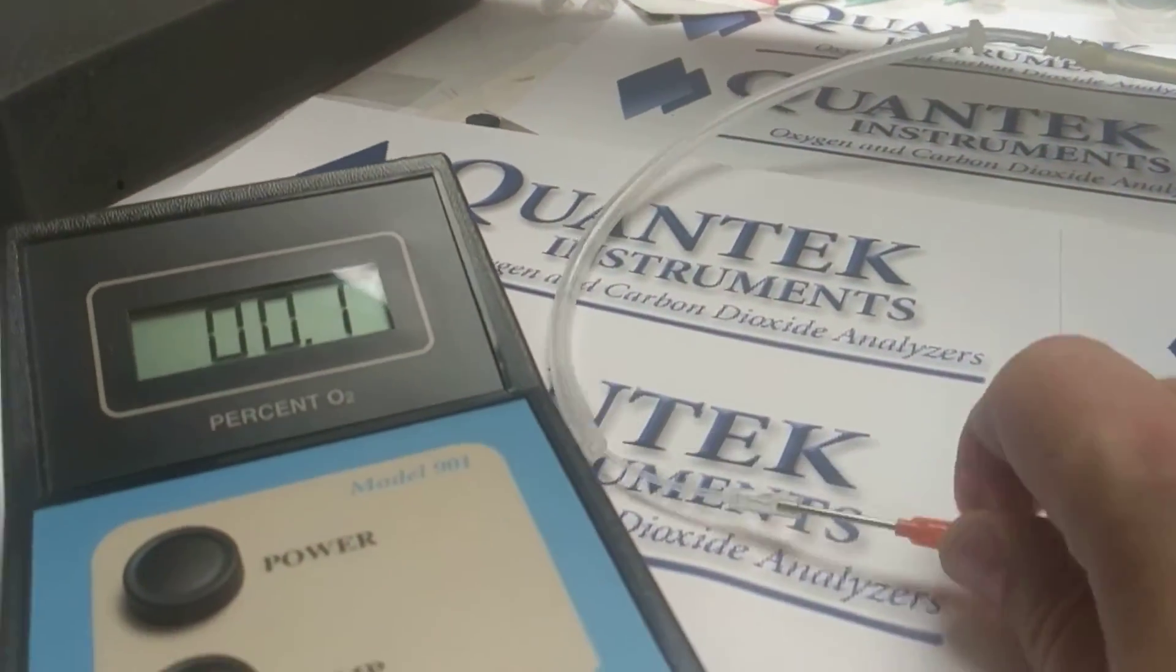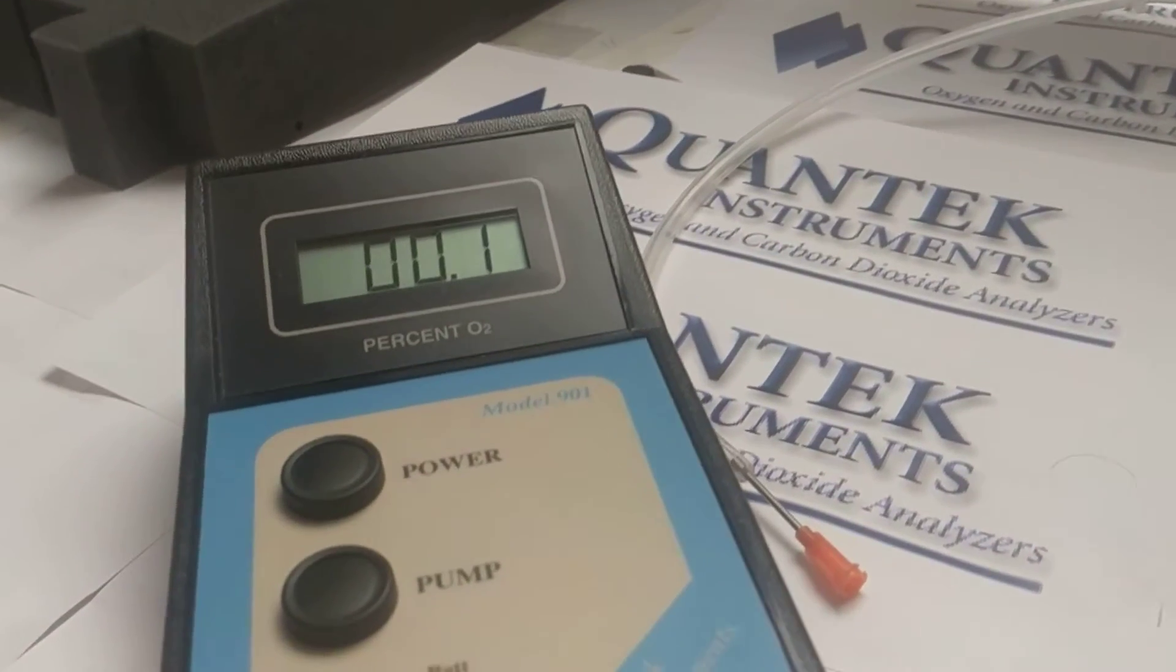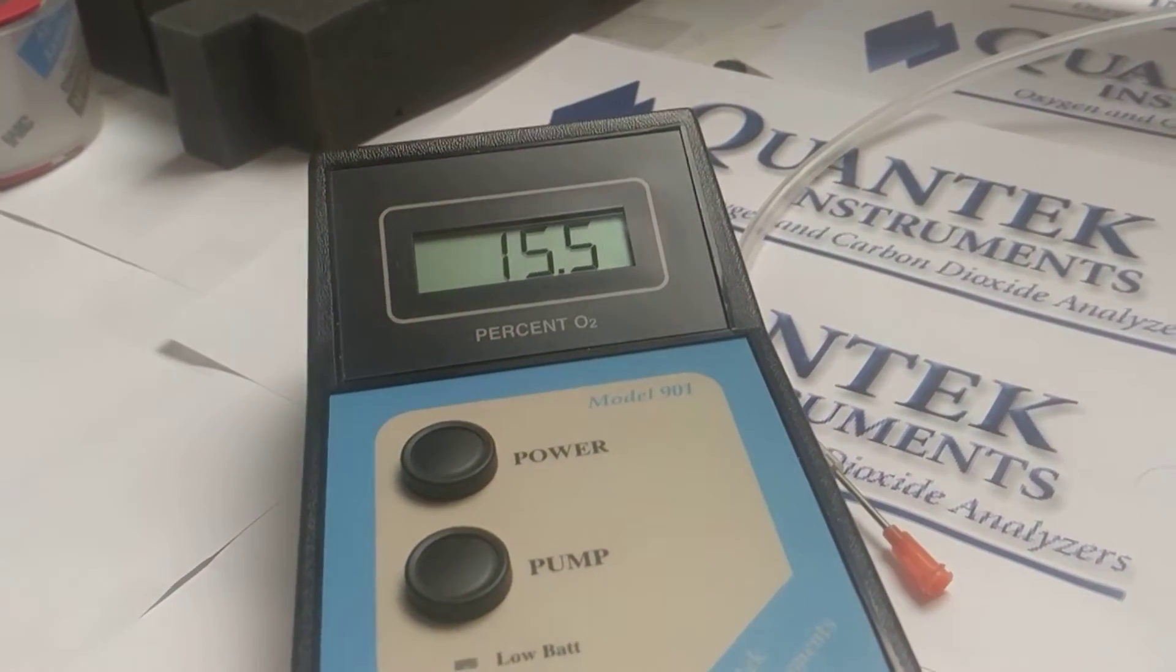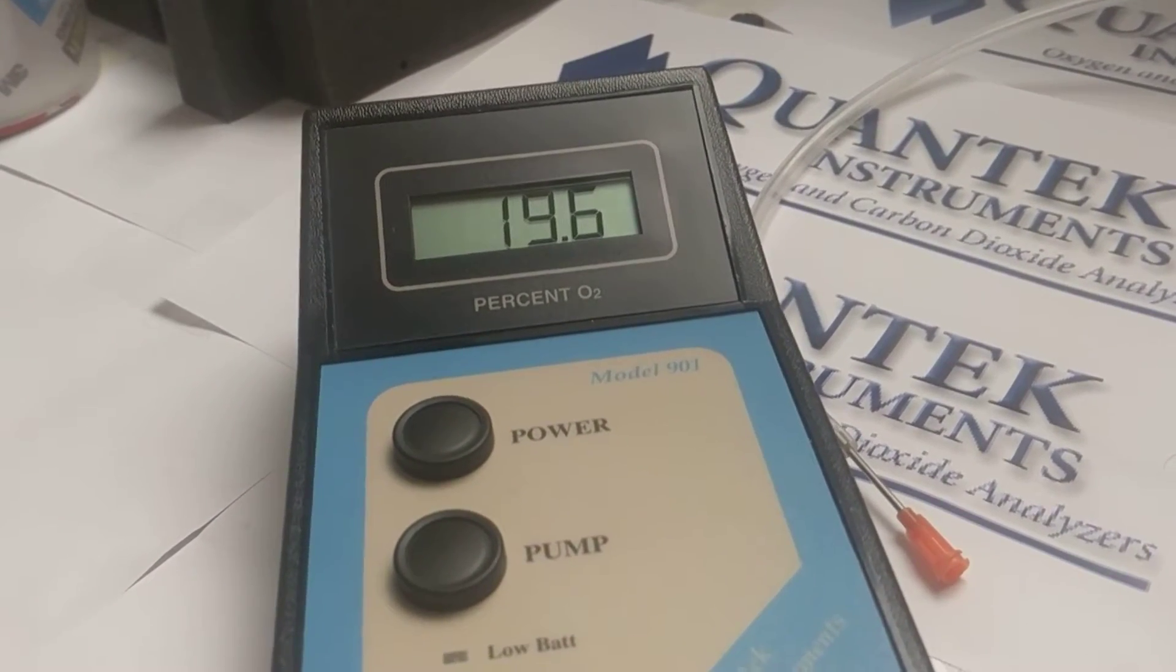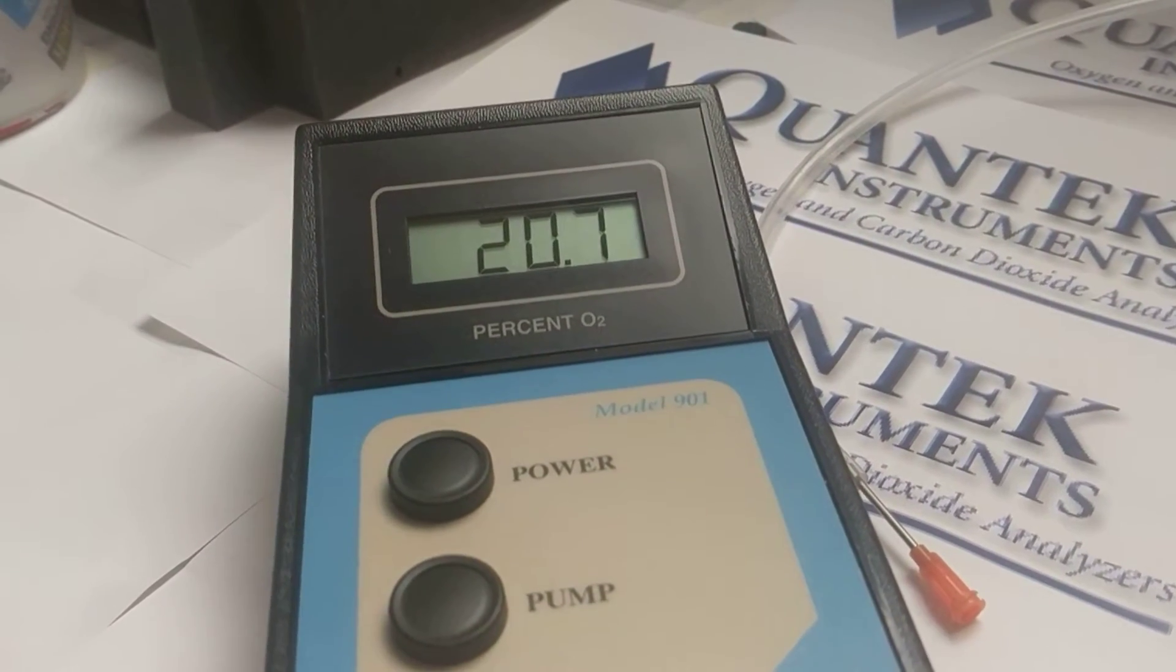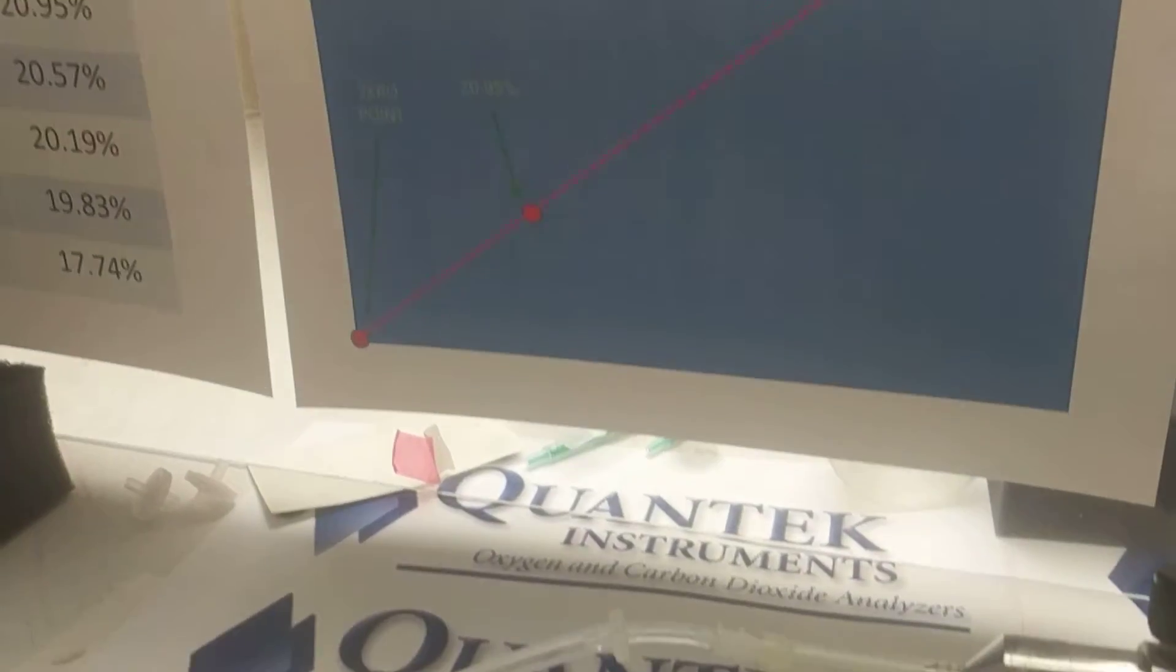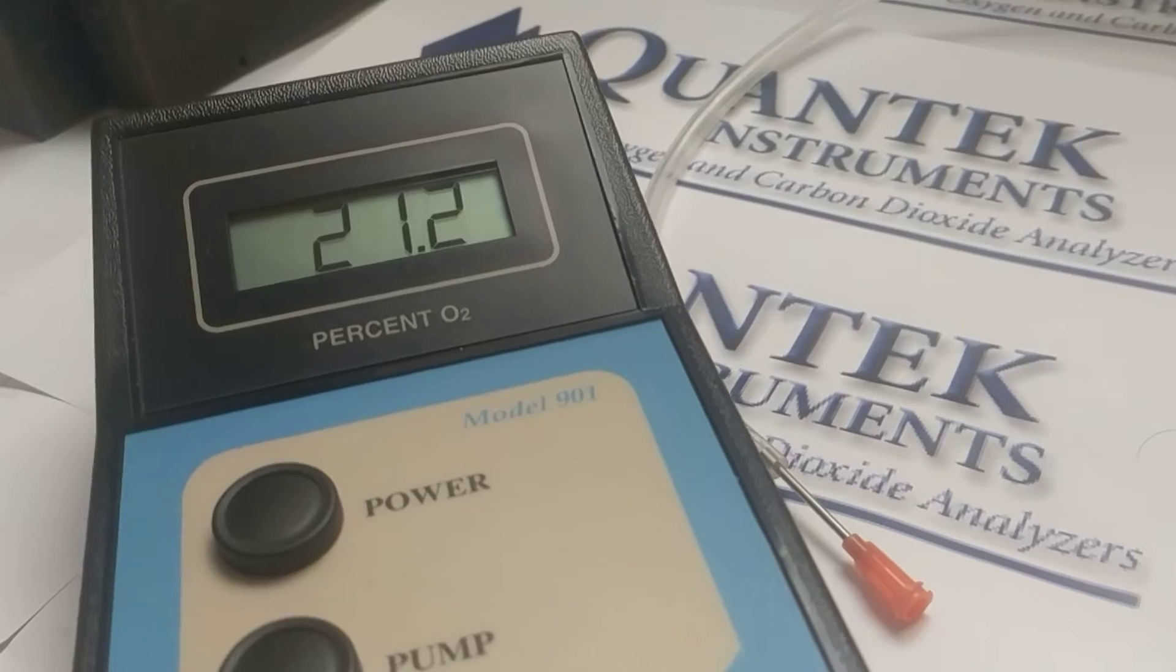Now we've just adjusted the zero point on the curve. So what we're going to do is we're going to disconnect the probe from the gas and we're actually going to press the pump button again. And what we're going to do now is actually adjust the span because any adjustment that you make to the zero will affect the span. I would expect that this would end up a little bit higher since we moved the zero point up. I would expect that the 20.9 will end up a little bit higher, and indeed it did.